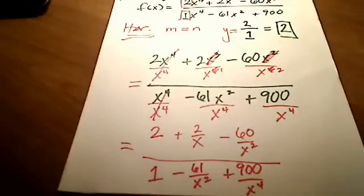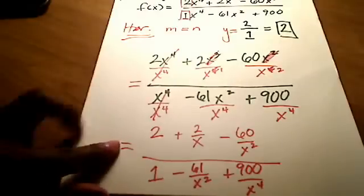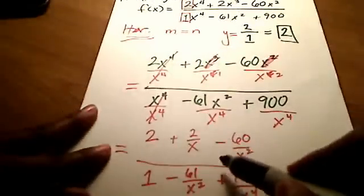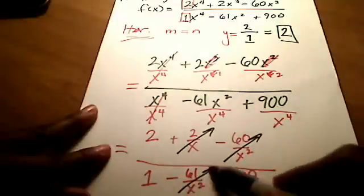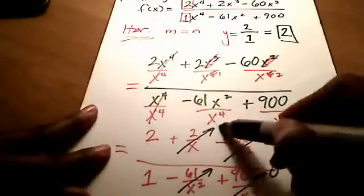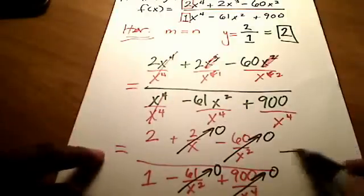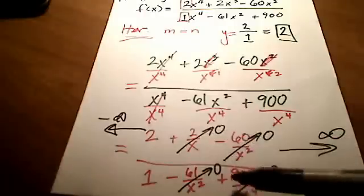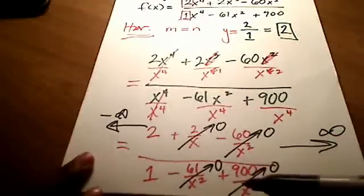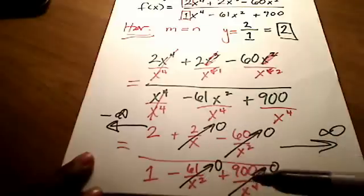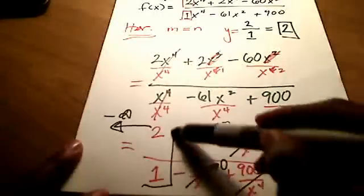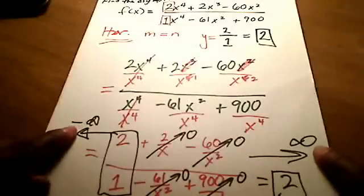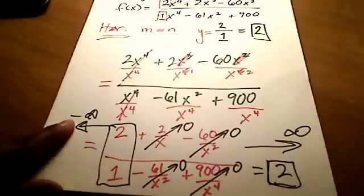From calculus, as the limit approaches infinity or negative infinity, any term with an x in its denominator — like 2 over x, minus 60 over x squared, minus 61 over x squared, or 900 over x to the fourth — all go to 0. So we're left with just 2 over 1, which equals 2, no matter which direction we're heading, positive or negative. The limit is 2.